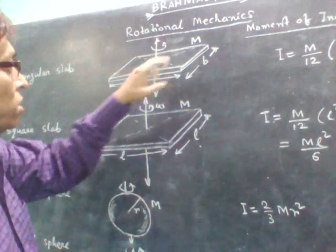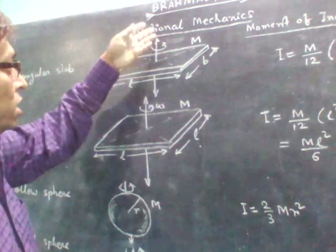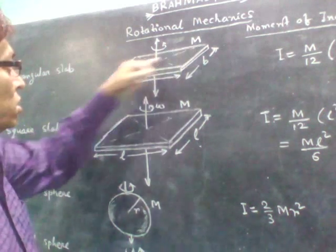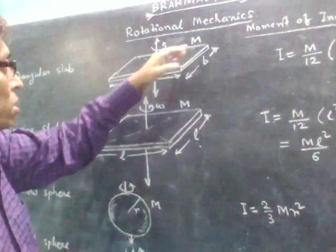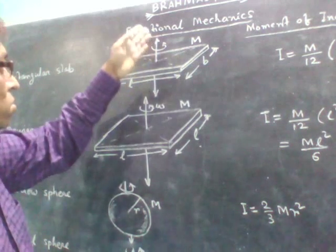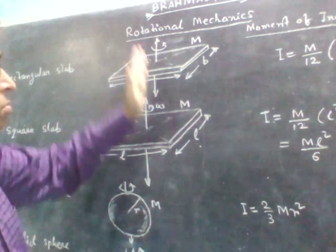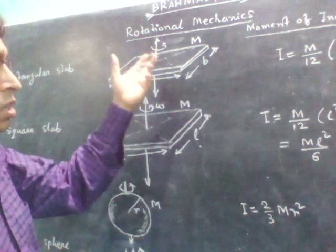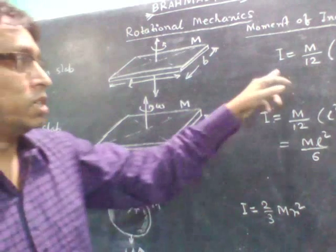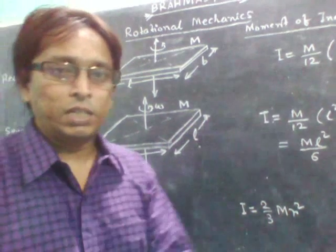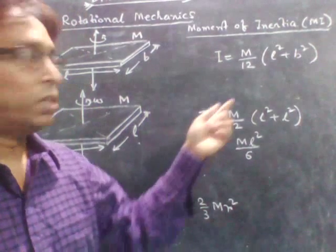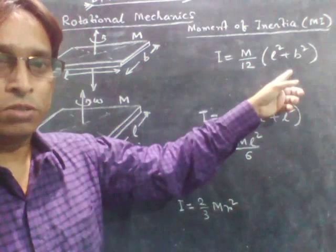So it is rectangular. So it is L and B and the axis is passing through the center. Center means it is these two are the diagonals. So from the intersection point it is perpendicular. So through this point the axis is passing. And if the slab rotates then its moment of inertia is given by M by 12. M is the mass of the slab. M by 12 into L square plus B square.